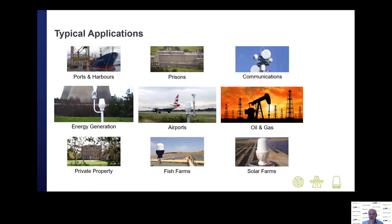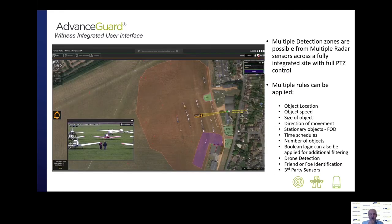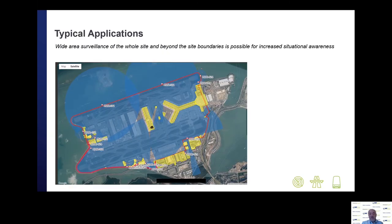Some typical applications for radar include ports, harbours, prisons, and generally anywhere with big open areas, though they can also see down narrow gaps as well. You can create multiple detection zones, as shown in our Witness front end, each with their own detection rules. We can define an alarm based on the object's location, speed, size, and direction of movement. The system can also look at stationary objects such as FOD on runways. Detection rules can be subject to time schedules, number of objects, and multiple rules can be used for additional filtering.